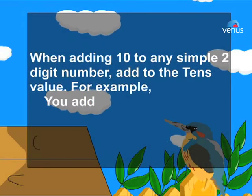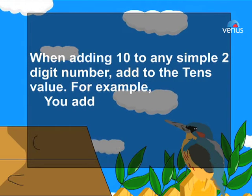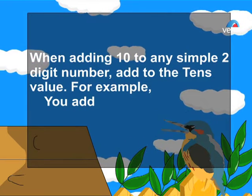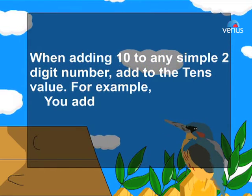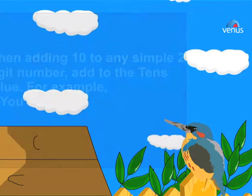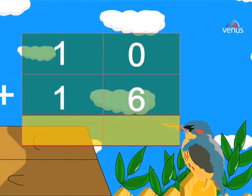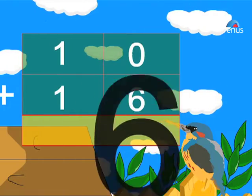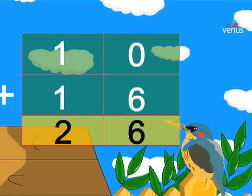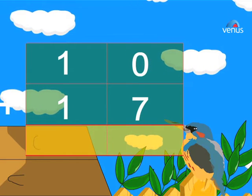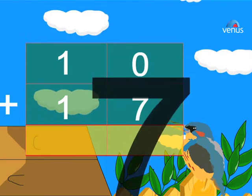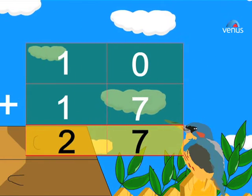Certain shortcuts to simple addition. When adding 10 to any simple two-digit number, add to the tens value. For example, 10 plus 16 equals 26, 10 plus 17 equals 27.